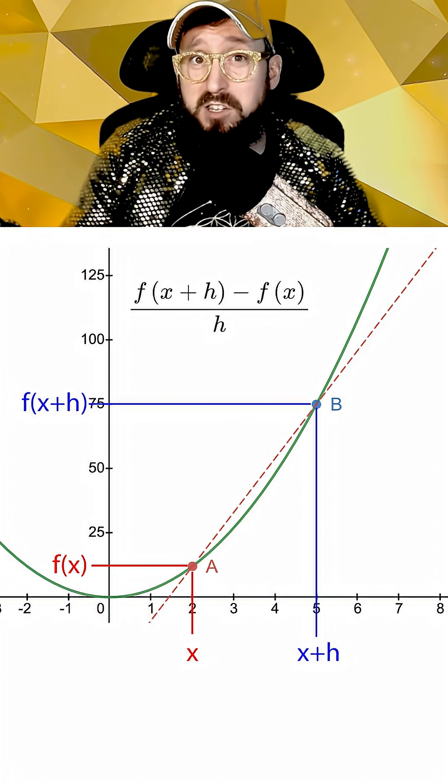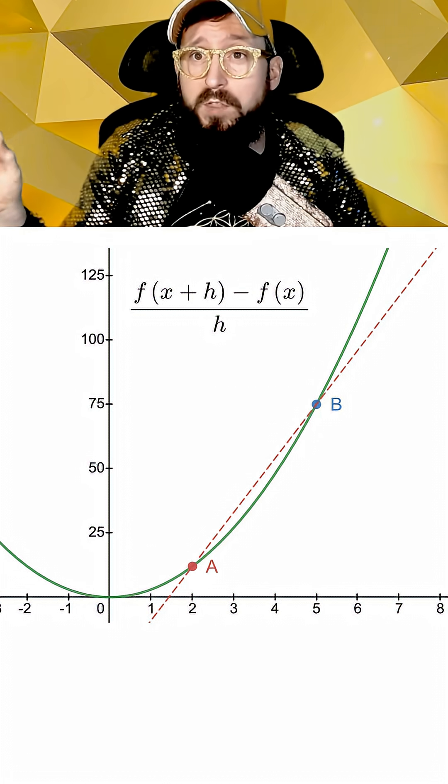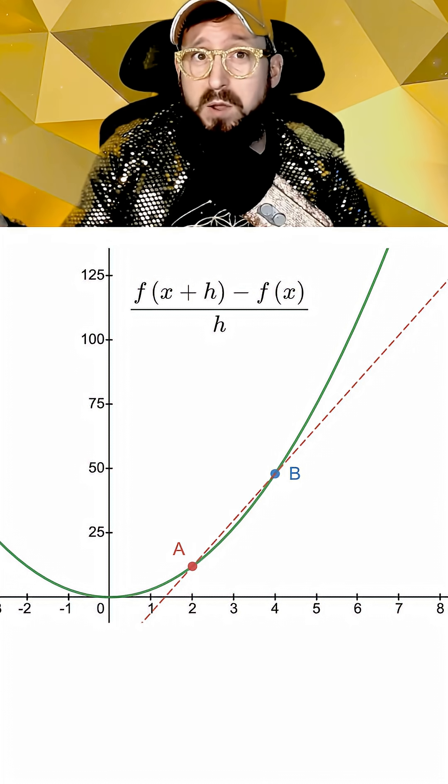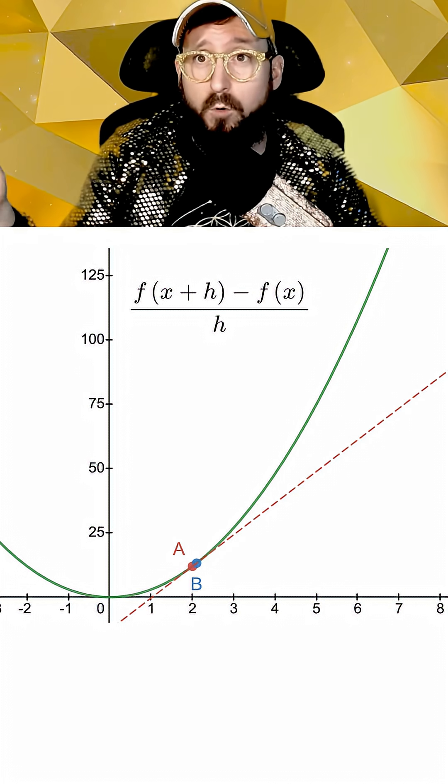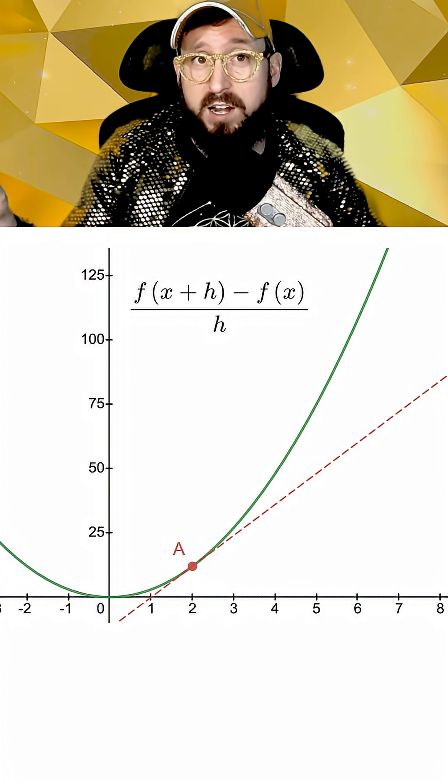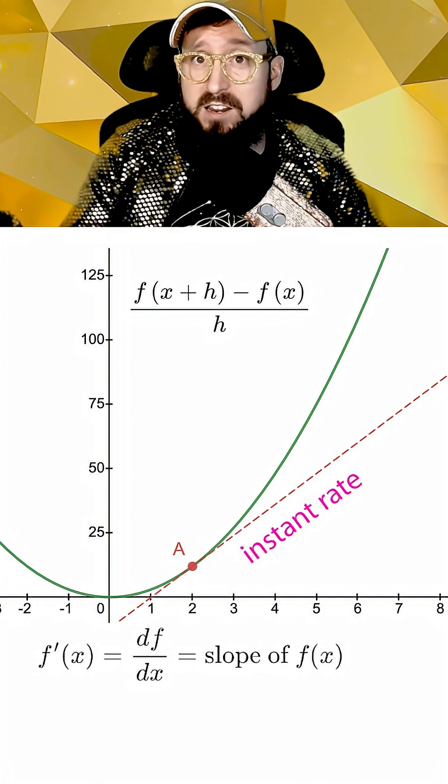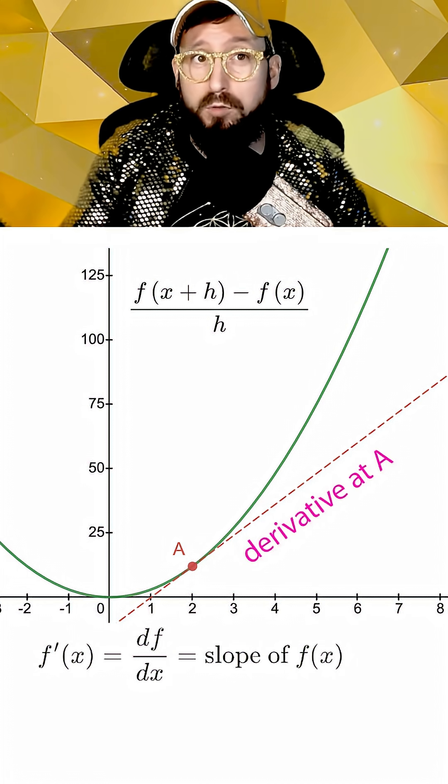One way to get a better estimate of the slope at point a would be to move the point b closer to a. If we did this until a and b were right next to each other, now our formula would give us the slope of the tangent line at a, which is also the instantaneous rate of change and the value of the derivative at point a.